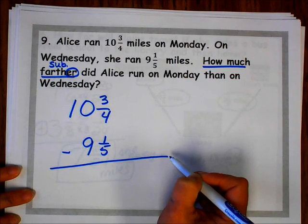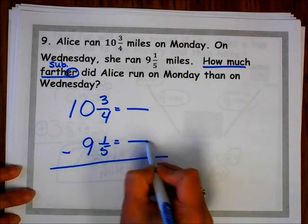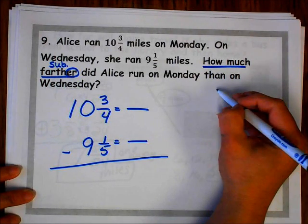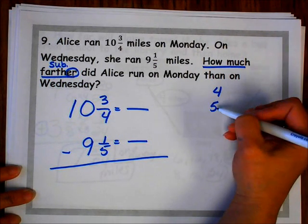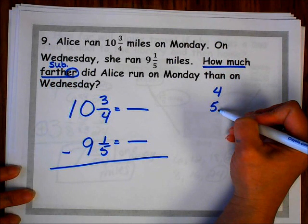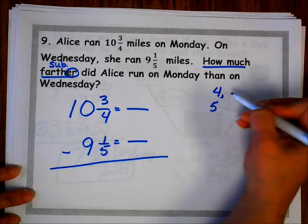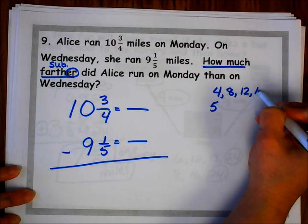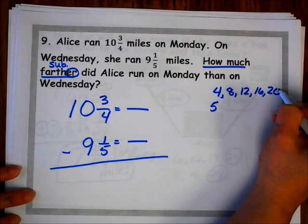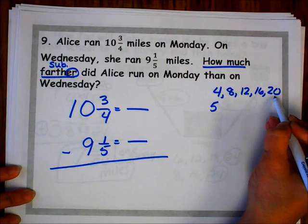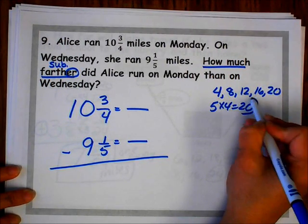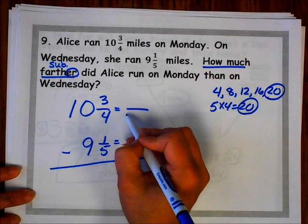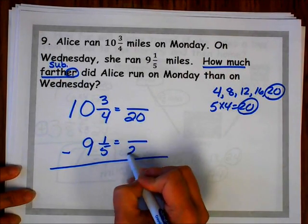I do not have a common denominator, so I know I'm going to have to find one. I'm going to count by 4s and count by 5s until I find a common multiple. Since all multiples of 5 end in a 5 or a 0, I'll start with 4: 4, 8, 12, 16, 20. I know that 5 is a factor of 20 because 5 times 4 is 20. So my lowest common denominator for 4 and 5 is 20.